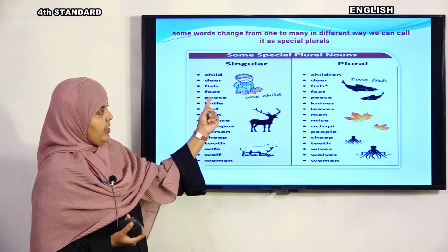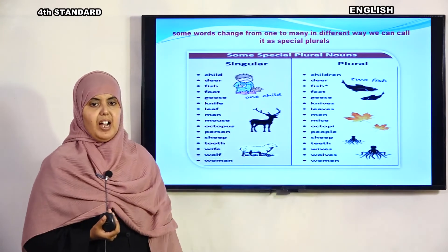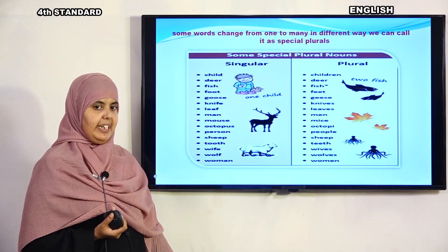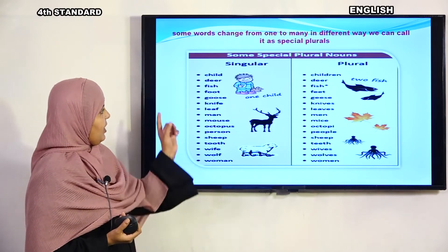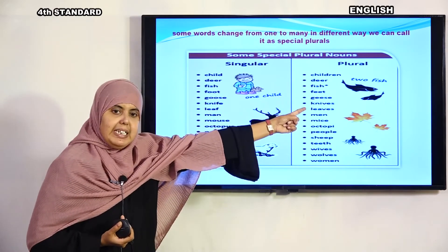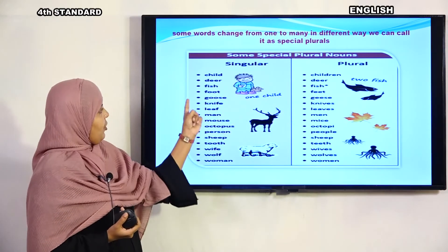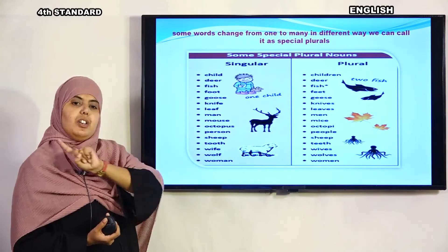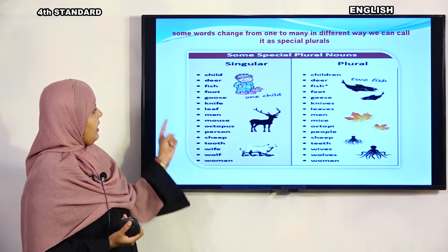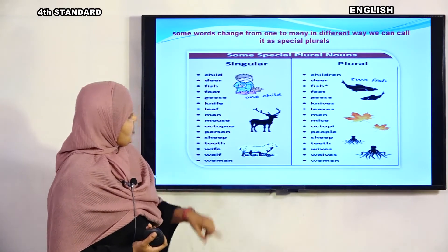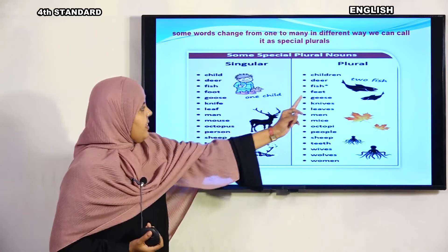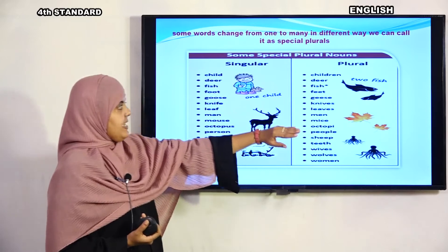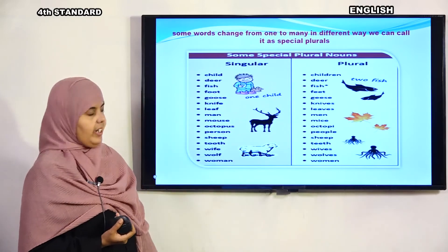Foot — feet. One foot (talwa) becomes feet (talwe) in plural. The spelling changes — foot has double 'o', feet has double 'e'. No 's' or 'es' is added. Goose — geese. Goose is a bird's name; more than one goose is called geese.